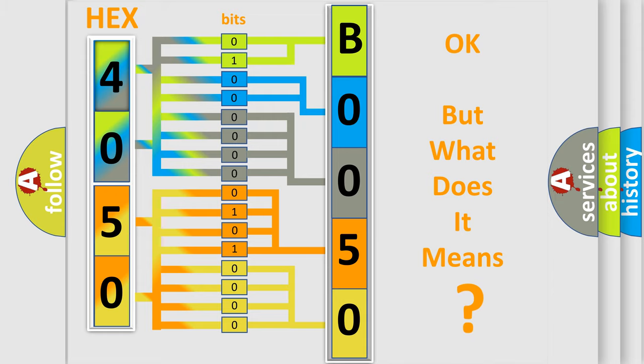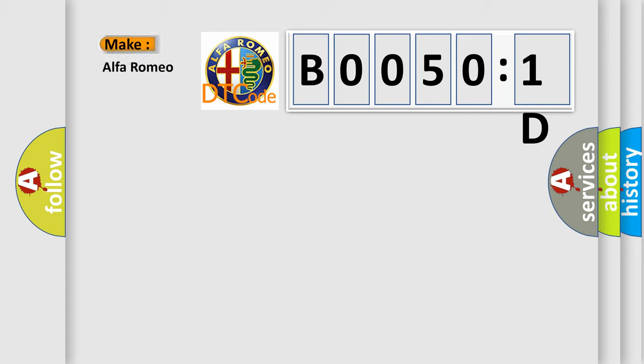The number itself does not make sense to us if we cannot assign information about what it actually expresses. So, what does the diagnostic trouble code B00501D interpret specifically for Alfa Romeo car manufacturers?